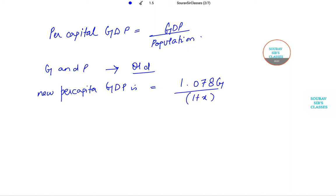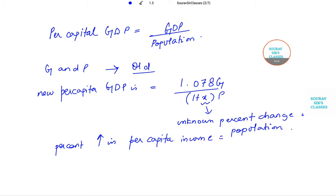Now you must be wondering what is x. X is the unknown percent change—the unknown percentage change that occurred in population which we wish to find out. So the percent increase in per capita GDP is given to be 10 percent, or you can write this as 0.1.